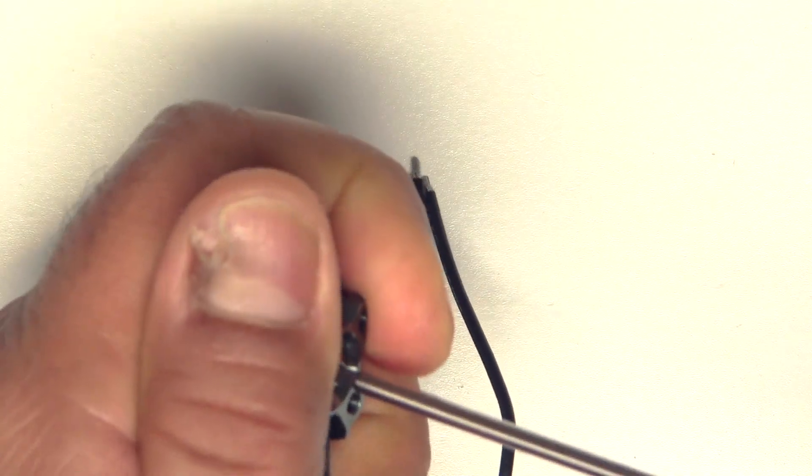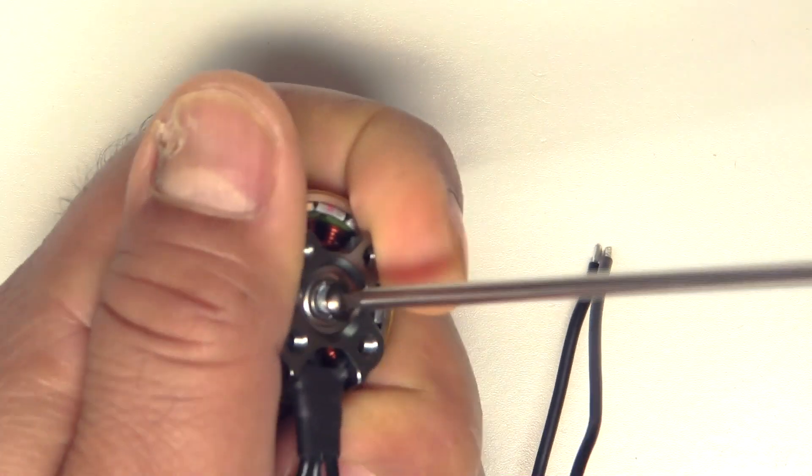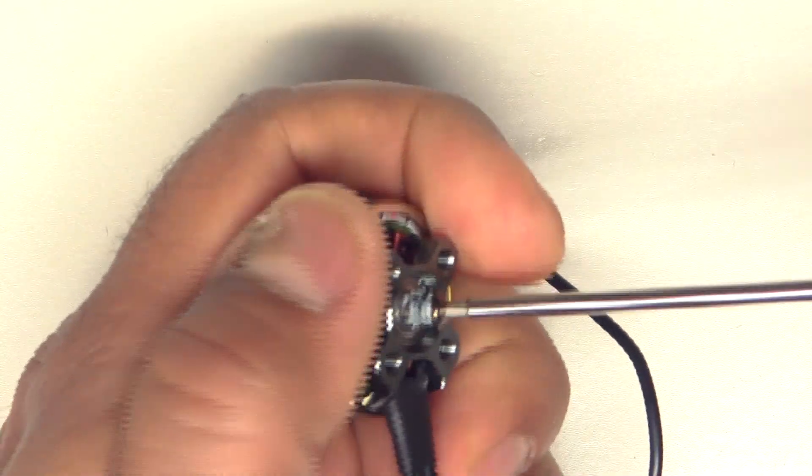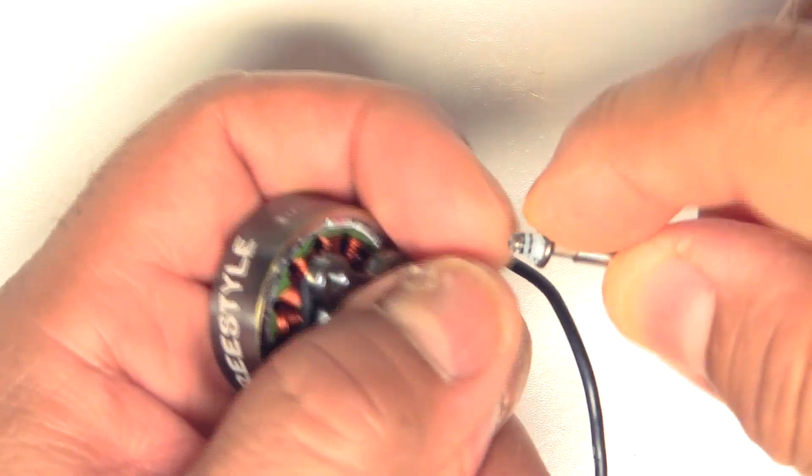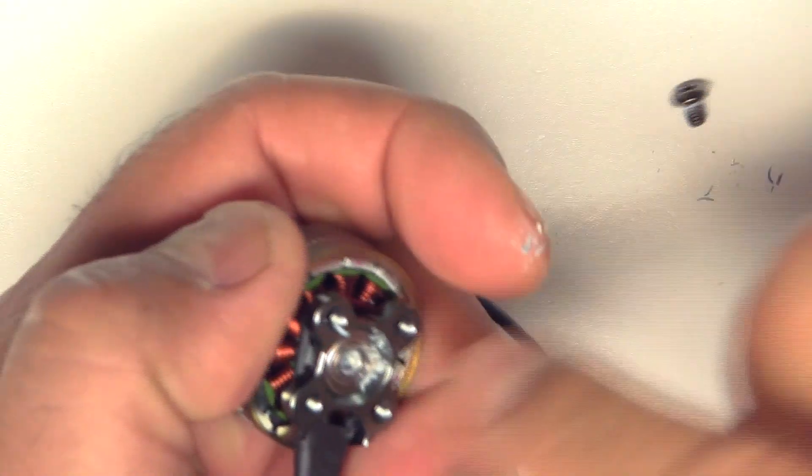So it seems that they do have some kind of locking material there, threadlock or something. Yeah, that's that white kind of blue kind of threadlock.